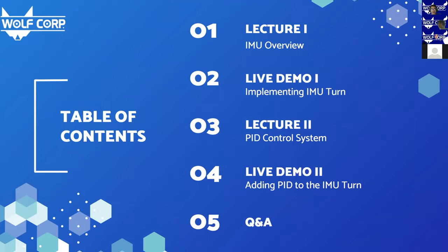In the 45 minutes we have, we'll be assuming that the audience is somewhat familiar with the FTC programming environment. There's also a workshop for just the basics as well, but we're hoping you have a bit of prior knowledge. First, we'll give a lecture on the Control Hub's internal measurement unit — the IMU, or gyro — then Josh will implement the gyro into our code and add a basic turning function. After that, we'll talk about PID systems and explain what a PID control system is, and then Zenkai will build off Josh's code by adding the PID control system.